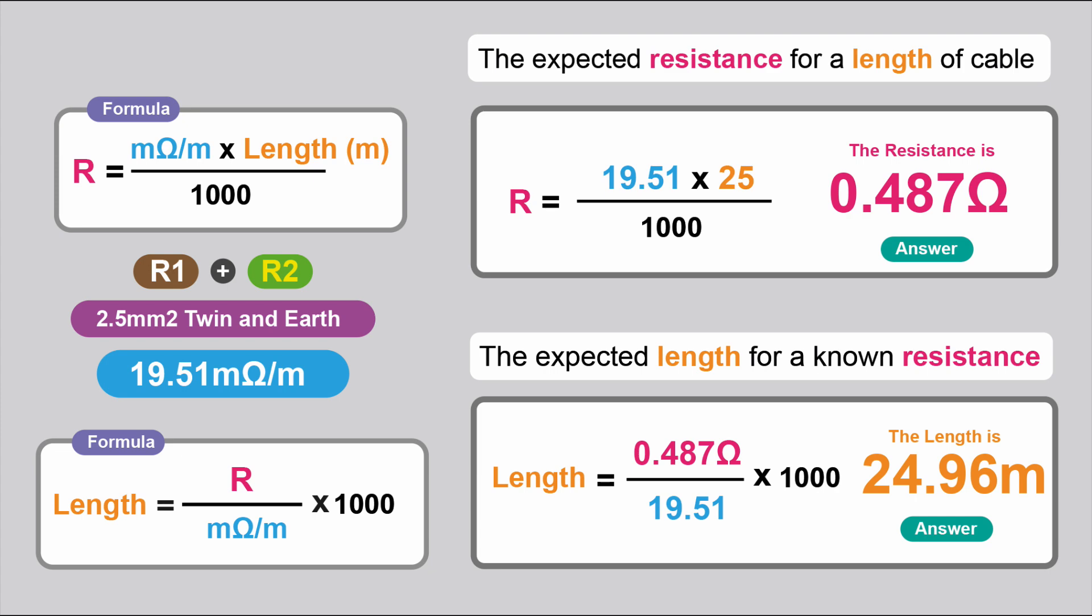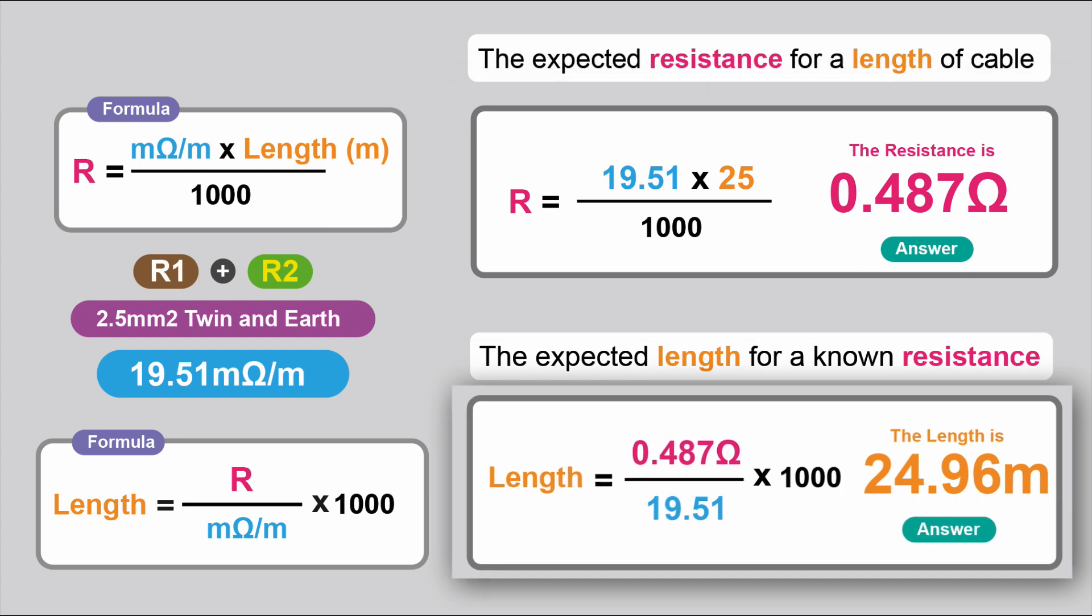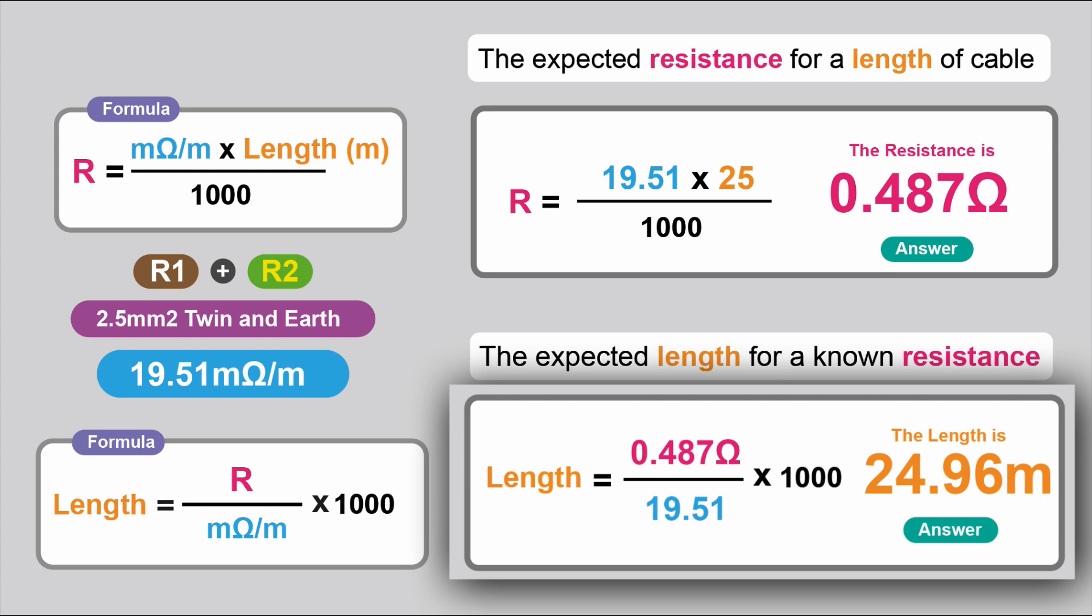We transpose it, so the length we're looking for now. So if we've got a resistance of 0.48 ohms, for example, what we do, we divide the 0.48 by 19.51, the milliohms per metre, and we times that by 1,000. That gives us 24.96 metres.